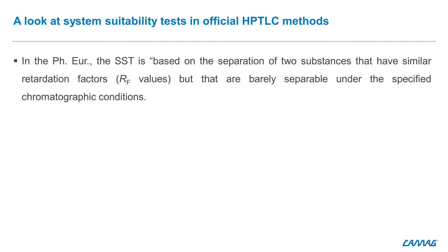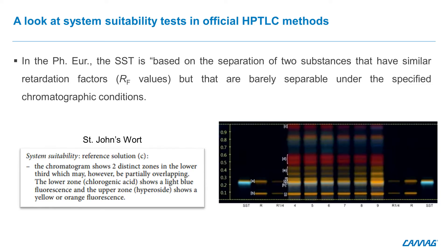For the European Pharmacopoeia, the SST is based on the separation of two substances that have similar RF values but are barely separable under the specified chromatographic conditions. The same example, St. John's Wort, is used here. In that case, the chromatograms show two distinct zones in the lower third, which may however be partially overlapping. The lower zone, chlorogenic acid, shows a light blue fluorescence, and the upper zone, corresponding to hyperoside, shows a yellow or orange fluorescence.